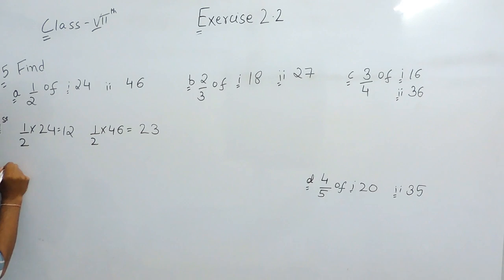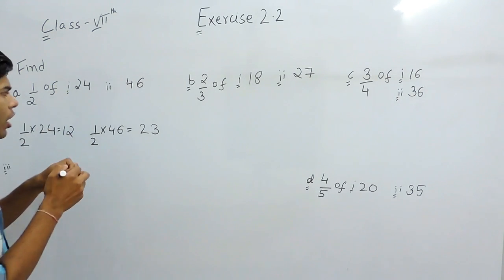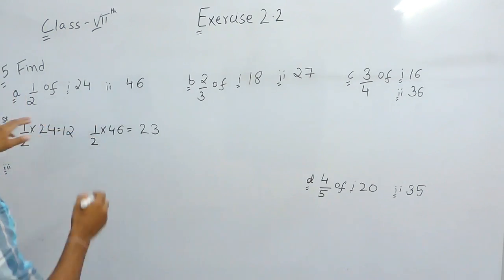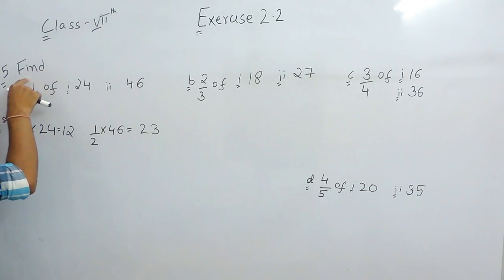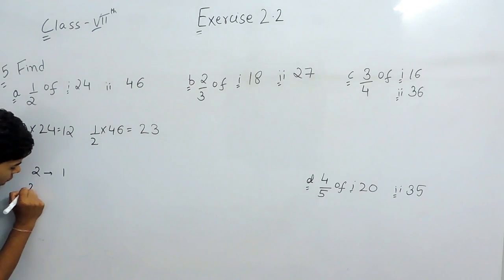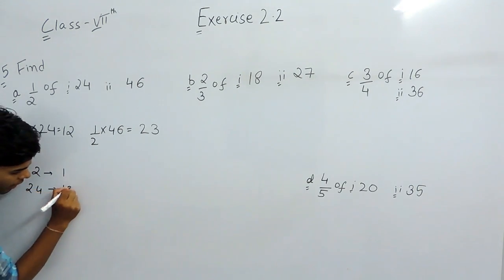Now the third way is that you can take this 24 like the questions we did previously. Supposingly, we say that 24 is the total. Out of 24 means out of 2, one part is shaded. This is the third method. Out of 2, one part is shaded. So out of 24 obviously 12 part will be shaded.